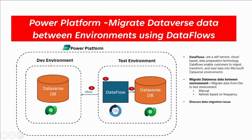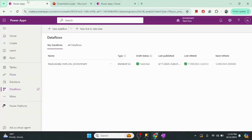As you can see in this diagram, I have two environments: a dev environment and a test environment. I want to set up a data flow that will transfer data from the dev environment to my test environment using the OData connector. In the transfer flow we can also set up manual or frequency-based refresh. I will also show one observation I noticed when migrating data from one environment to another.